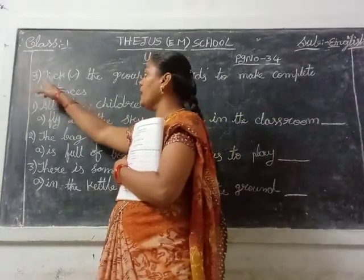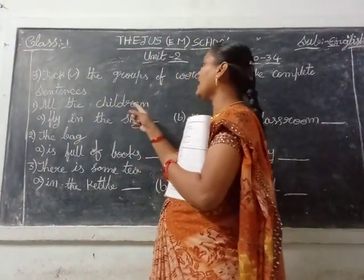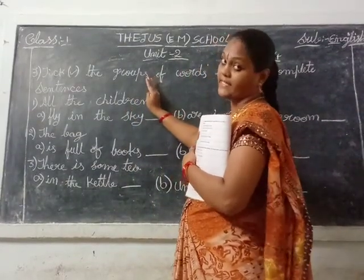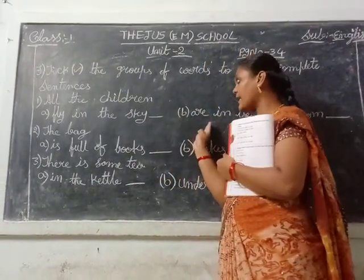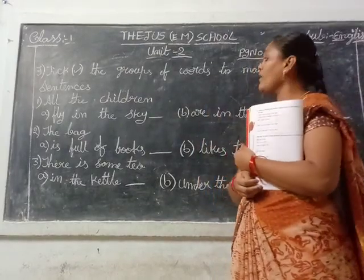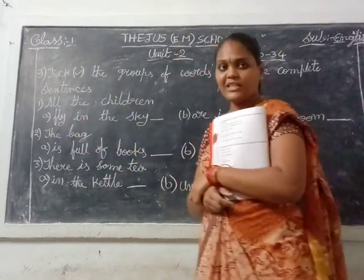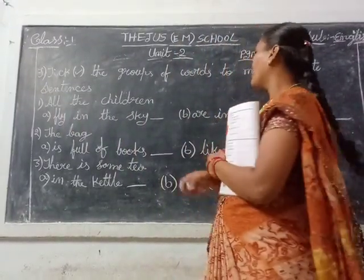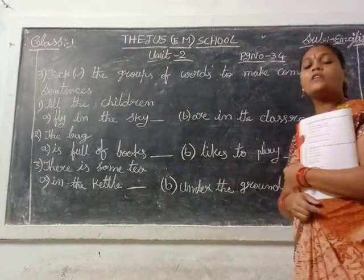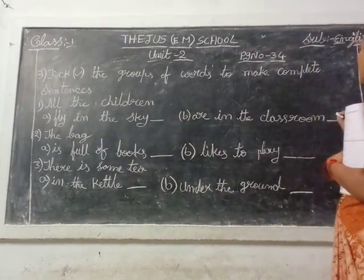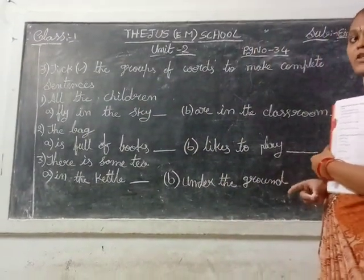See the next problem, F Roman: tick the groups of words to make complete sentences. Some half-sentences are given here with A and B options — which one is the correct remaining sentence to complete it. So see: 'All the children.' A option: fly in the sky — all the children fly in the sky? No. B option: all in the classroom — all the children are in the classroom. That is the correct sentence. So you tick the B option.